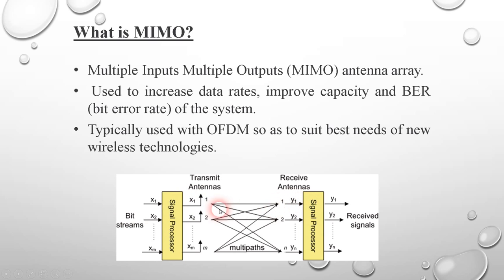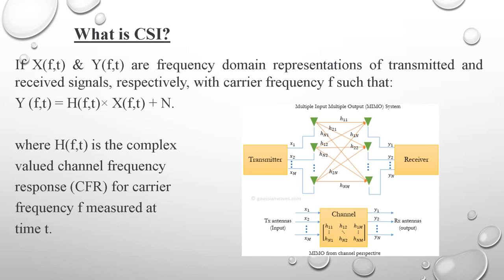Instead of having only one antenna to send and one to receive, nowadays we have a sending system where bit streams come in serial or parallel, go through signal processing, and are then sent via multiple antennas. Those signals are received by multiple antennas on the receiver side, which also performs signal processing. This delivers better data rates, better capacity, better signal-to-noise ratio, and better bit error rates.